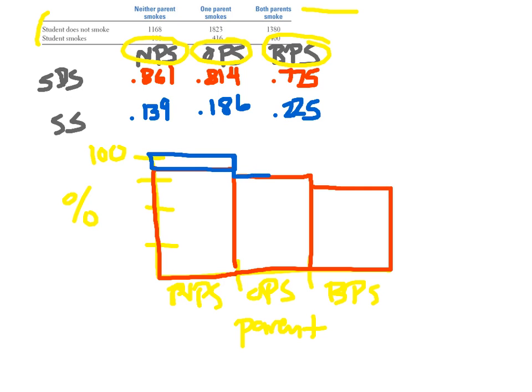What does this tell you? The percentage of students who don't smoke is highest when neither parent smokes and lowest when both parents smoke. Similarly, the percentage of students who do smoke is highest when both parents smoke. Basically, the more parents smoke, the more likely their students are to smoke.